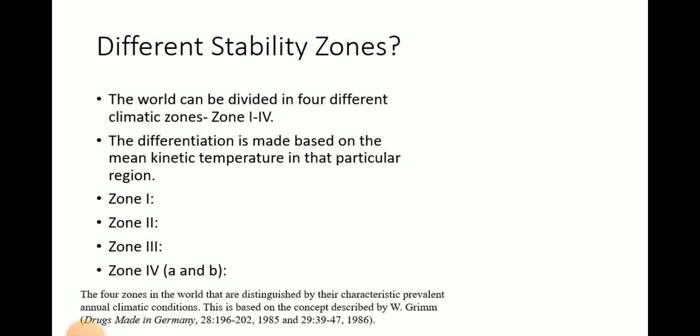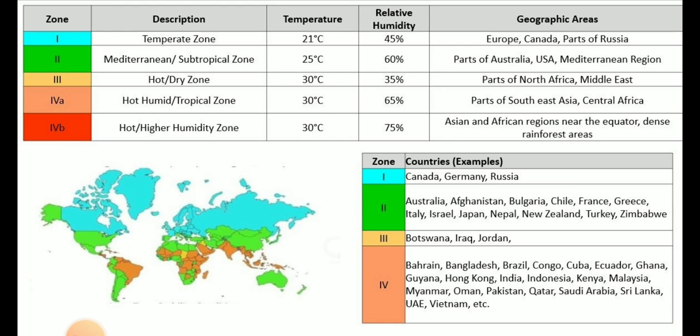There are different stability zones you might have heard about. These zones are categorized based on the mean kinetic temperature in that particular region. Accordingly, the world is divided into four zones: zone 1, 2, 3, and 4. Zone 4 is further sub-categorized as zone 4a and 4b. Here is a representation of the different stability zones and their mean kinetic temperature and relative humidity in each particular region.